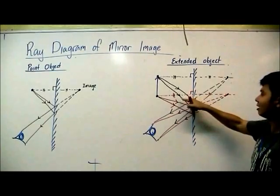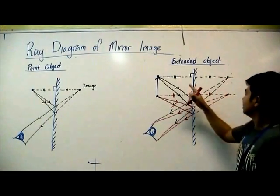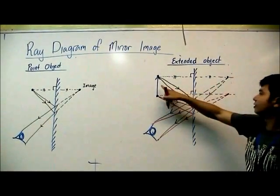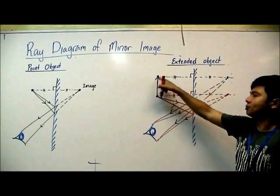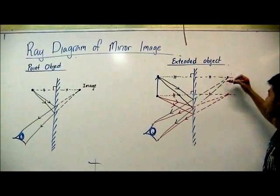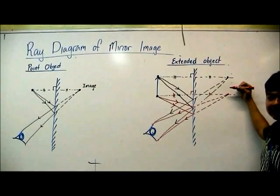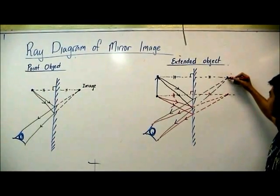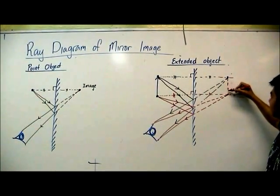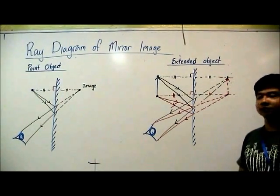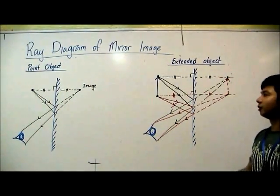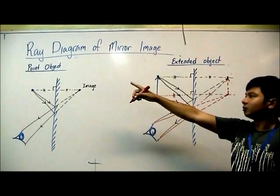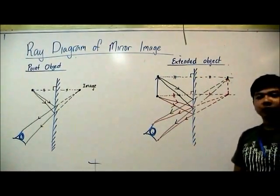So all together, there will be eight arrows. And now, if we have an arrow object here, I'm going to get an arrow image. And since this image is a virtual image, the image should be dotted. So this is how the mirror image for a point object and an extended object will look like.